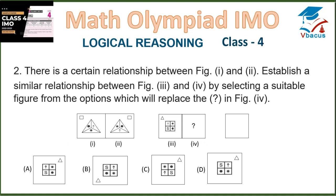Question 2: There is a certain relationship between figure 1 and figure 2. Establish a similar relationship between figure 3 and figure 4 by selecting a suitable figure from the options which will replace the question mark in figure 4. In figure 1, this rectangle has moved to the right-hand side. So I have taken this triangle to the right-hand side of the square. The dot, arrow, and star have shifted accordingly.